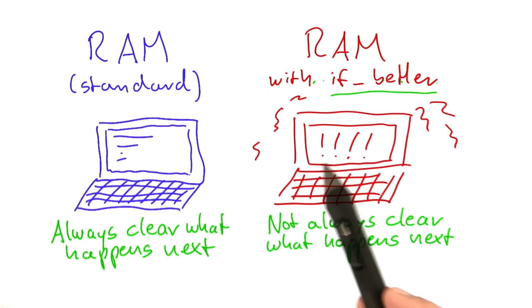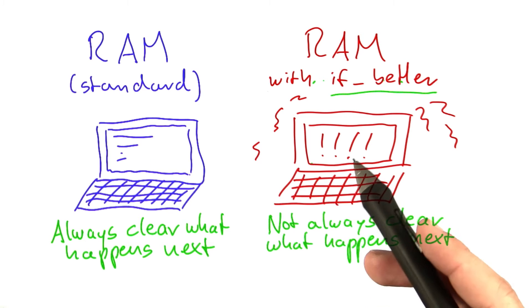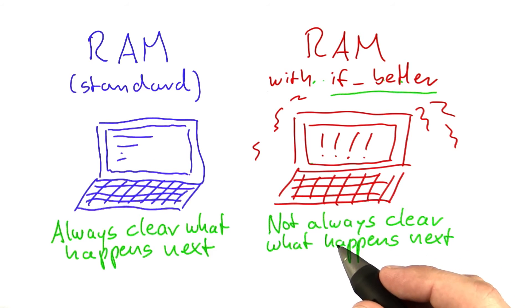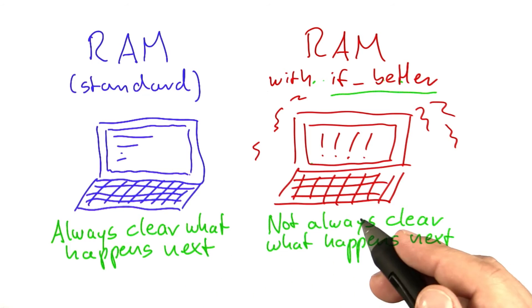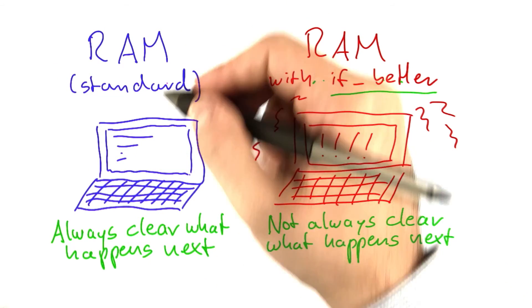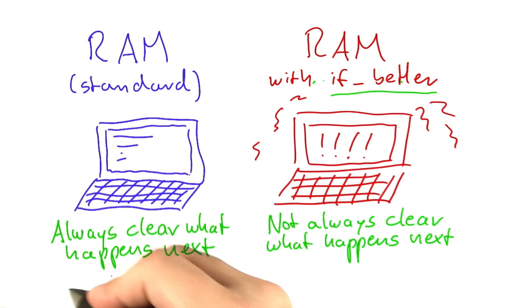And so in order to better distinguish those two models, there's a special terminology in theoretical computer science called determinism and non-determinism. And this standard RAM machine, because we always know what's going to happen next, is called deterministic.